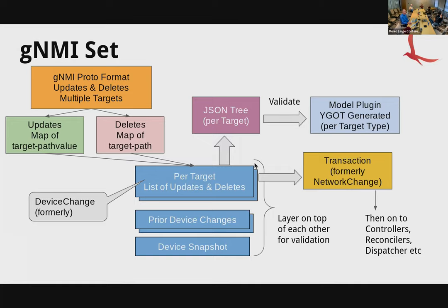Once the JSON tree answer comes back, we take the device change and write it to the device change store. Then we build up the transaction — formerly called the network change. As was discussed, there's a duplication where the whole change log is in both the device change and the network change. They're going to reduce that to only have the log in the network change. Once it goes into the network change, it goes to the controller and will continue to reconcile until that network change is pushed down to the device.